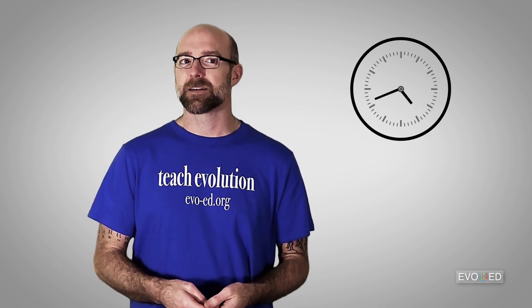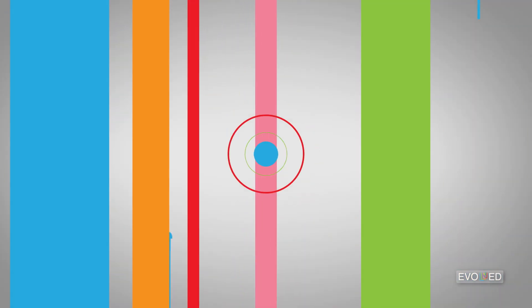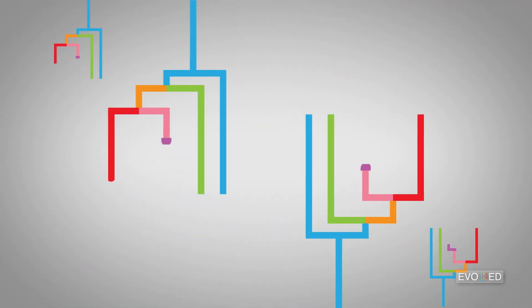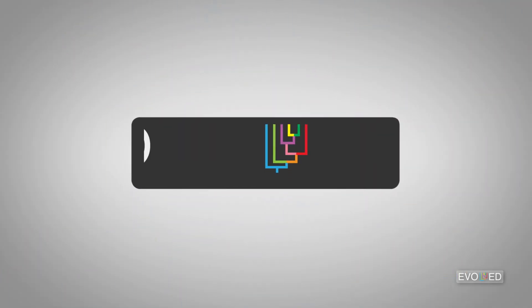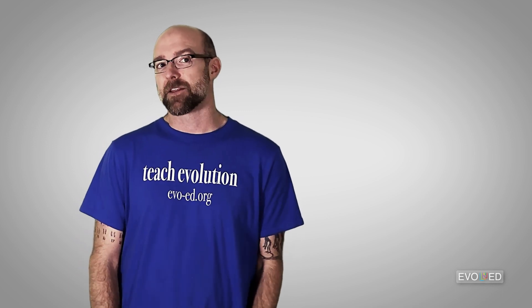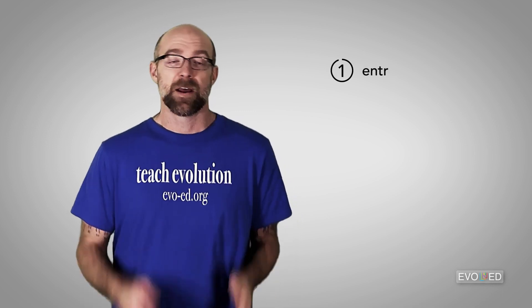This is the virus life cycle. To keep things as simple as possible, I'm going to break the virus life cycle down into three stages: entry, replication, and shedding.